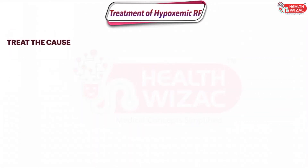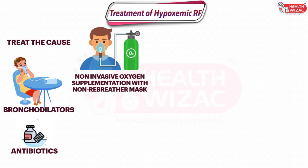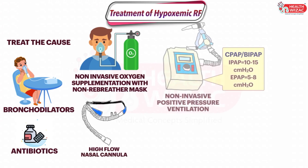Treatment includes treating the underlying cause first, such as asthma and COPD with bronchodilators, and antibiotics for infective conditions. Non-invasive oxygen supplementation with a non-rebreather mask should be started at the earliest. High-flow nasal cannula and non-invasive positive pressure ventilation is considered if the patient is not responding. NIPPV includes CPAP or BiPAP, primarily set at IPAP 10 to 15 and EPAP 5 to 8 cm of water.